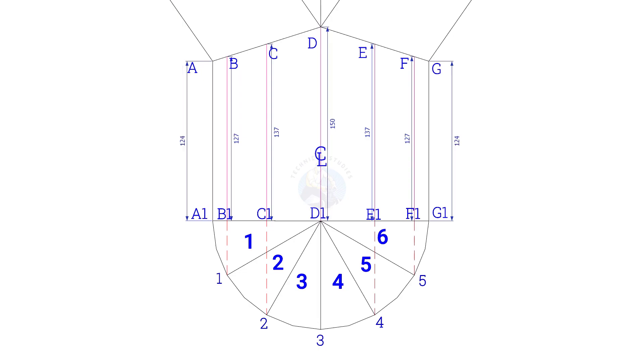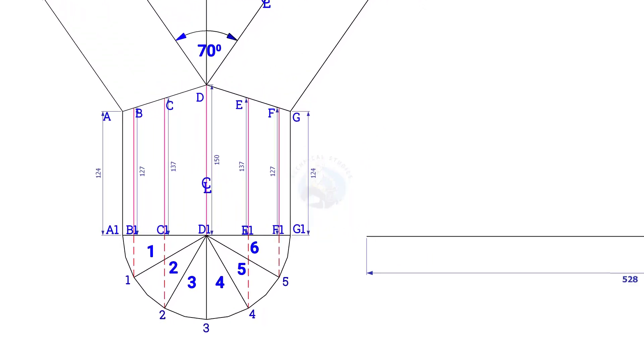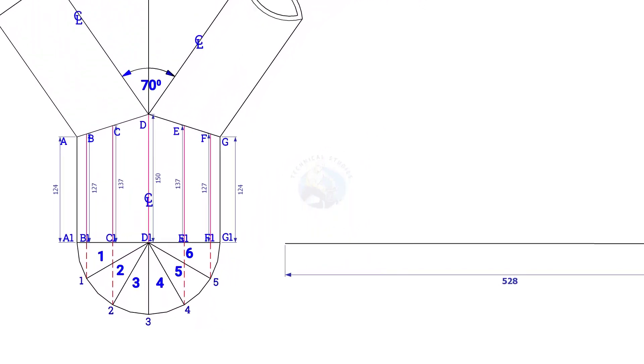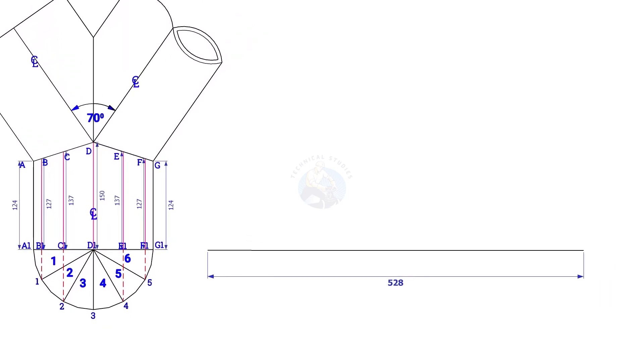The circumference is nearly 528mm. Draw a 528mm long line. Since we divided the half circle into 6 parts, divide the line into 12 equal parts. 528 divided by 12 is 44, so the length of each segment is 44mm.